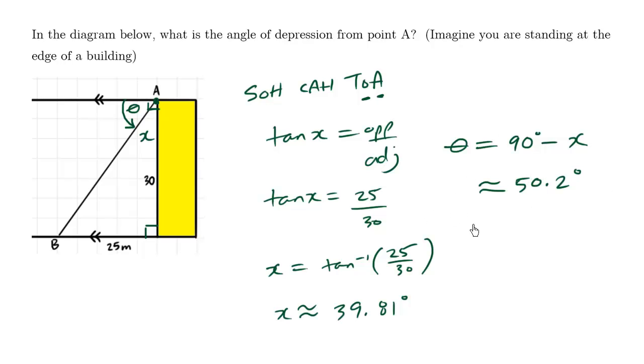Now another way of doing this problem would be to solve this angle here. This angle also happens to be theta because what we see here is the letter Z. This letter Z pattern is the alternating angle. And using that theorem, these are equal.